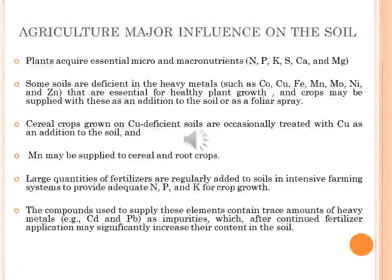Some soils are deficient in heavy metals such as cobalt, copper, iron, manganese, and nickel zinc that are essential for healthy plant growth, and crops may be supplied with these as additions to the soil or as foliar sprays. Cereal crops grown on copper deficient soils are occasionally treated with copper, and manganese may similarly be supplied to cereal and root crops.